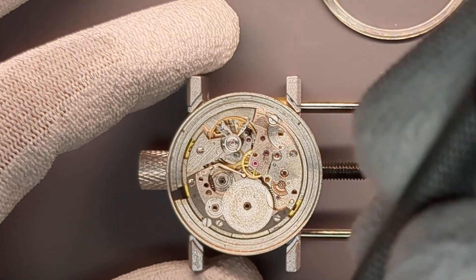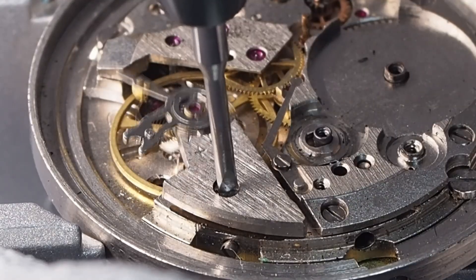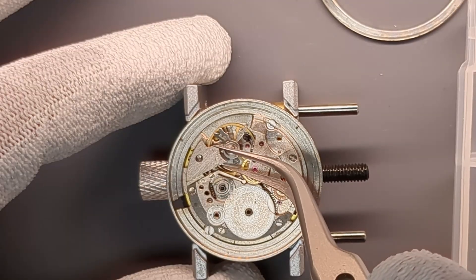The next step is to remove the balance wheel. I unscrew the balance cock. It's held by one screw.